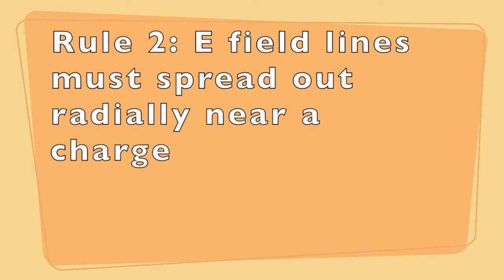The next rule is that the electric field lines must spread out kind of radially in all directions near a charge. This makes sense because you wouldn't expect there to be more field on one side of a charge than another. You expect it to be radially symmetric.